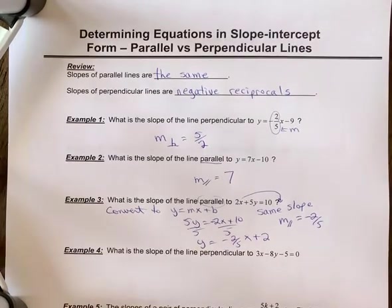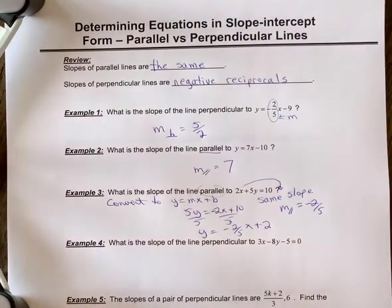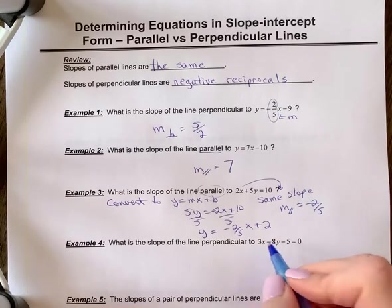Number 4, what is the slope of the line perpendicular now to 3x minus 8y minus 5 equals 0? Again, you have to convert it to y equals mx plus b form first.